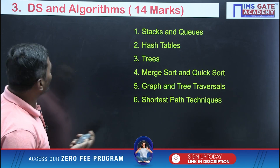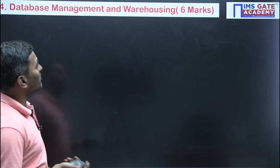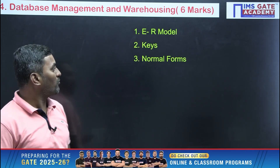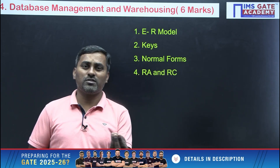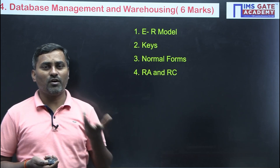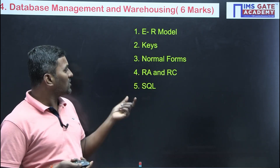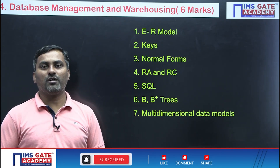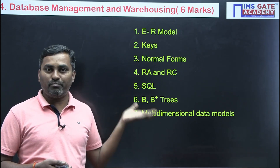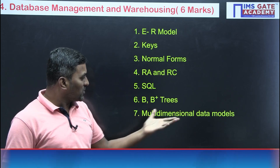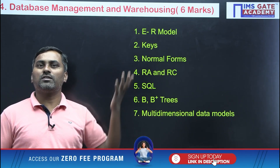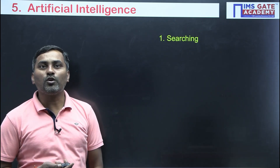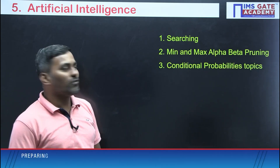For Database Management System, relational models are essential — study your models and various keys. Normal forms are important: First, Second, Third Normal Form, and BCNF. Relational Algebra, Relational Calculus, SQL, and B+ Trees from file organization are topics that have been framed in the DA paper. Data Warehousing topics should also be covered. DBMS has maintained an average of 6 marks in the DA paper.